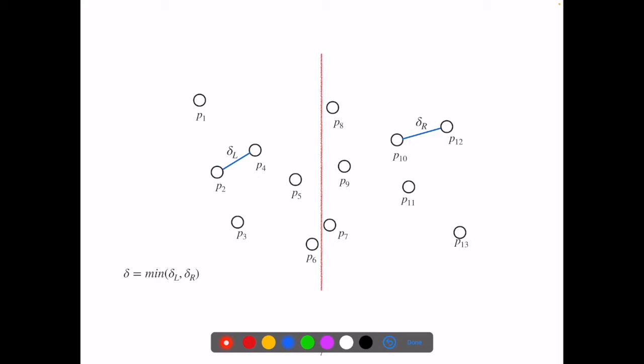Recall we use recursive application of the algorithm to the left and right halves of the set, and compute the minimum distance on the left side, delta L, and the minimum distance on the right side, delta R. Let us use delta to denote the minimum value of the two.